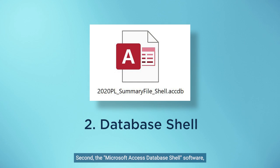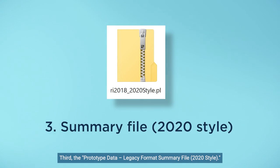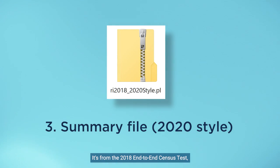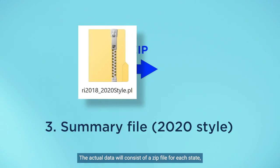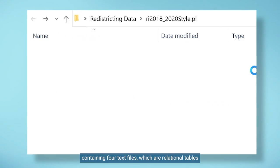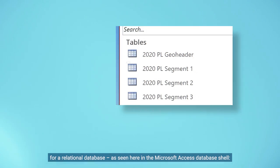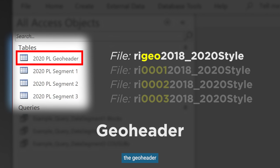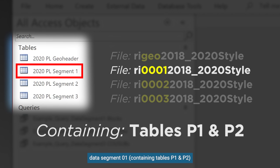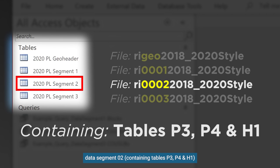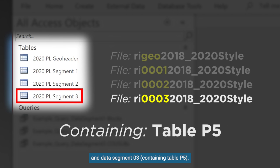Second, the Microsoft Access database shell software, which features tables and queries for the data. Third, the prototype data legacy format summary file 2020 style — it's from the 2018 end-to-end census test, but it's in the same format as the 2020 redistricting data. The actual data will consist of a zip file for each state containing four text files, which are relational tables for a relational database, as seen here in the Microsoft Access database shell: the geoheader, data segment 01 containing tables P1 and P2, data segment 02 containing tables P3, P4, and H1, and data segment 03 containing table P5.